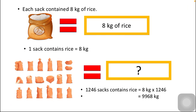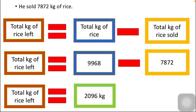Whenever we are moving from one sack to find the total kg of rice for many sacks, we always use the multiplication operation. That is why at the bottom it is written: 8 kg — the rice packed in one sack — multiplied by 1246, the total number of sacks. The answer we get is 9968 kg of rice packed in 1246 sacks.